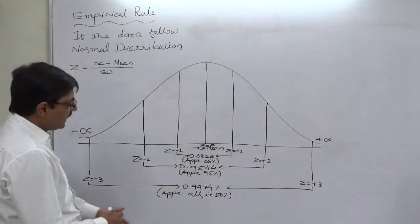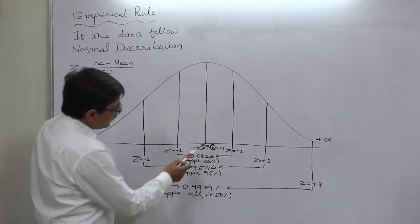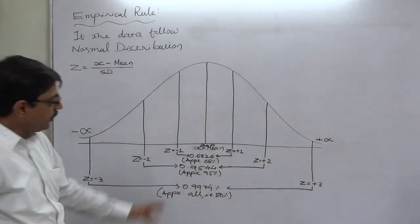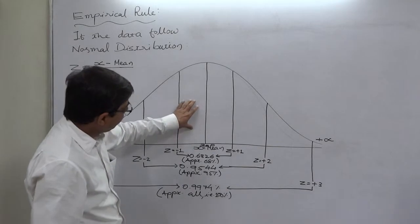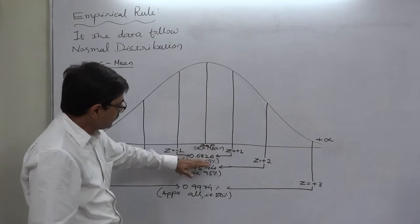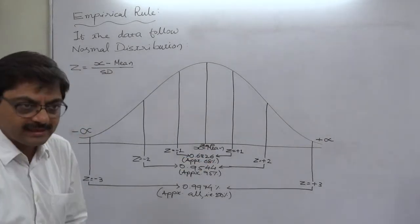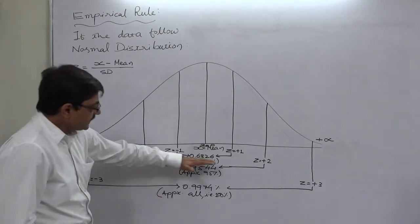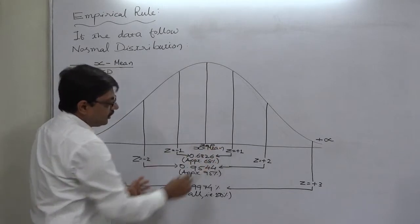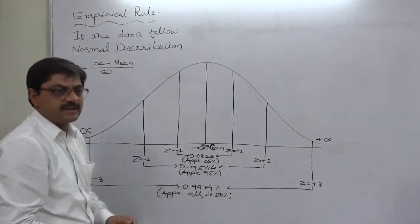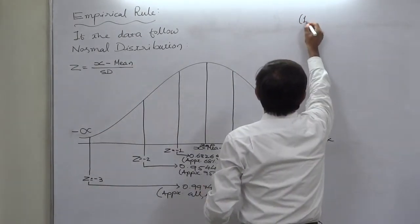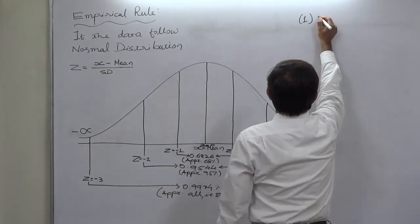If we refer to the table of the area under the normal curve, the area between Z=0 and Z=1 on either side is 0.3413. So 0.3413 on the left and 0.3413 on the right gives a summation of 0.6826, meaning approximately 68% of values lie between Z=−1 and Z=+1.